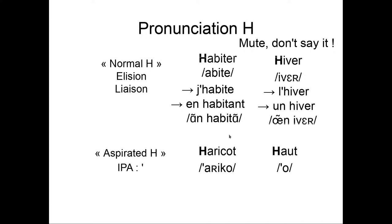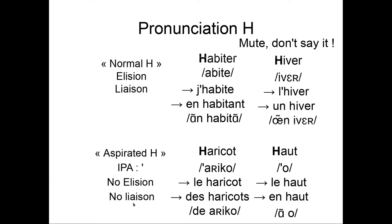And the second type of H is the aspirated H. In the dictionaries, you will see an apostrophe. In IPA, you will see an apostrophe for meaning that the H is aspirated. There is no way to know, other than looking at the dictionary, if an H is aspirated or not. And in that case, so here, we have haricot and haut. And in that case, there is no elision. So we don't say l'haricot. We say le haricot. We don't say l'haut. We say le haut. L'eau means something else. Eau means water. And there is no liaison. So we don't say des haricots. We say des haricots.